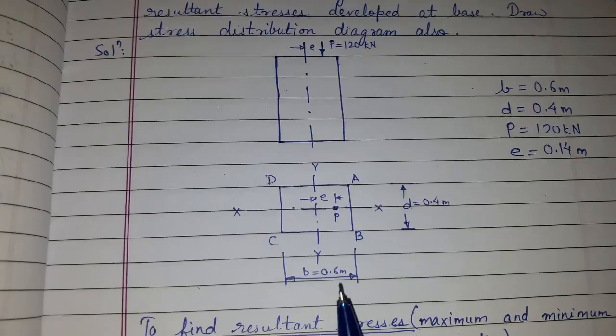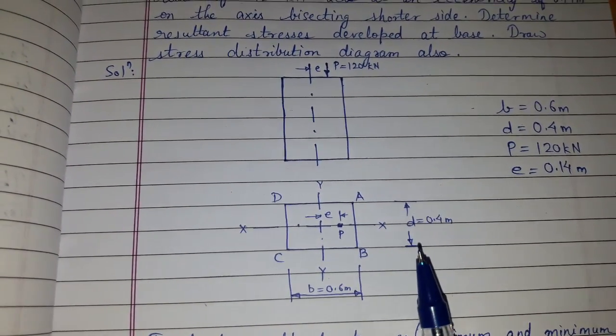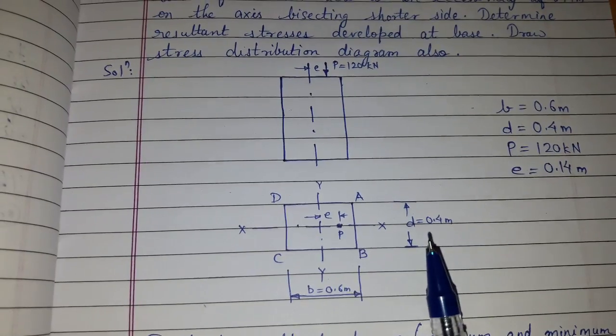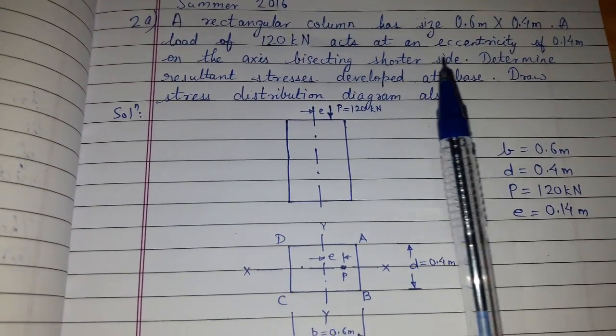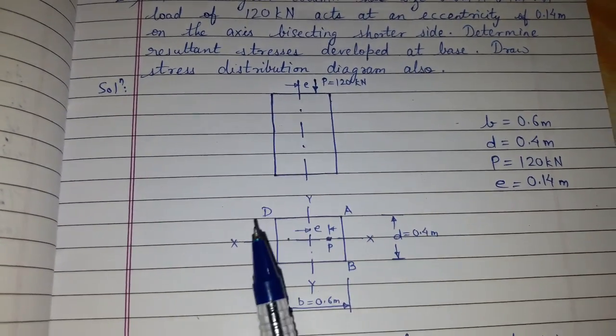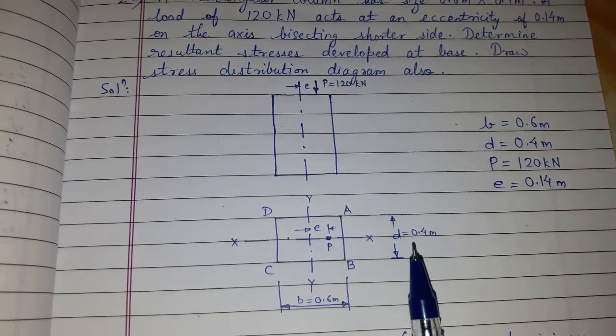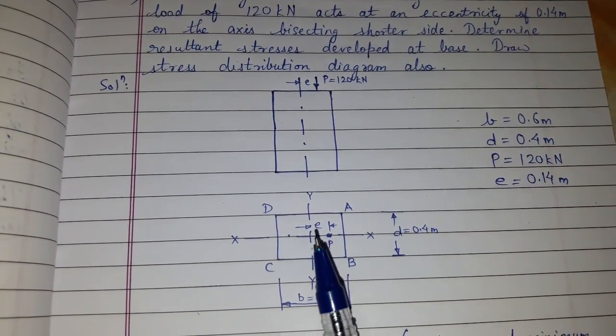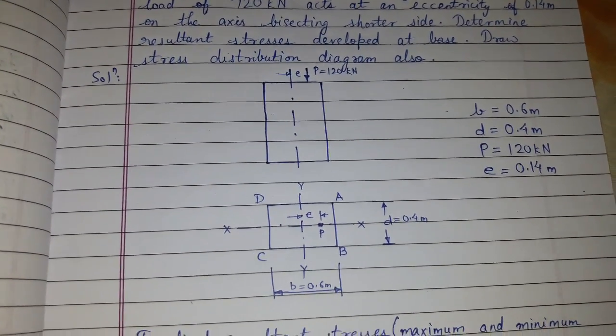Here it is given that the width is 0.6 meter and the thickness will be 0.4 because it is the shorter side. That's why we have taken thickness as 0.4 meter. It is given that eccentricity of 0.14 is on the axis bisecting the shorter side. So XX is bisecting the shorter side which is D equals 0.4 meter, and the eccentricity is with respect to the Y axis.